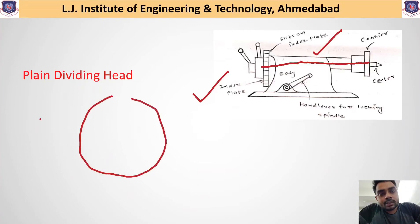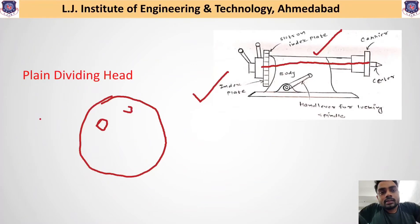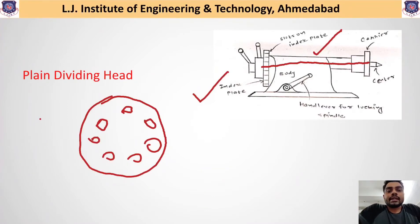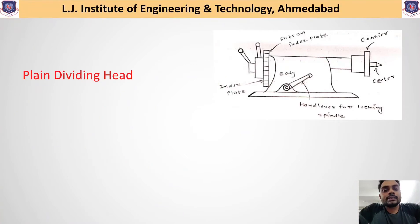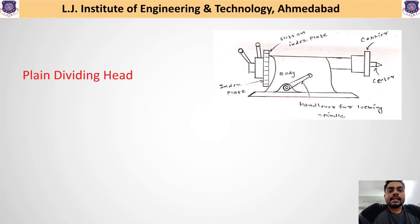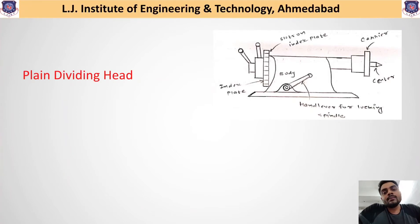To understand the indexing plate, consider a simple circular plate on whose periphery different numbers of holes are available from center towards the outer side — this type of plate is called the indexing plate. This indexing plate is given rotation using a lever or handle at its end. With the rotation of the handle, the indexing plate rotates, which rotates the spindle, which in turn rotates the workpiece.